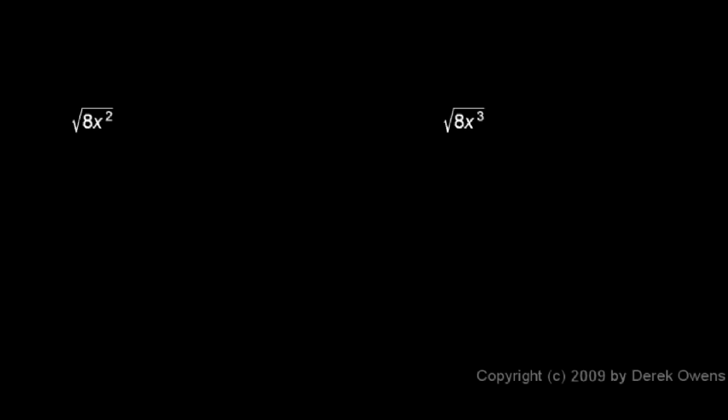The square root of 8x squared. Well, 8 is 4 times 2. So if I write it that way, 4 times 2 times x squared, I see I have a perfect square here in my 4 and, of course, in my x squared.